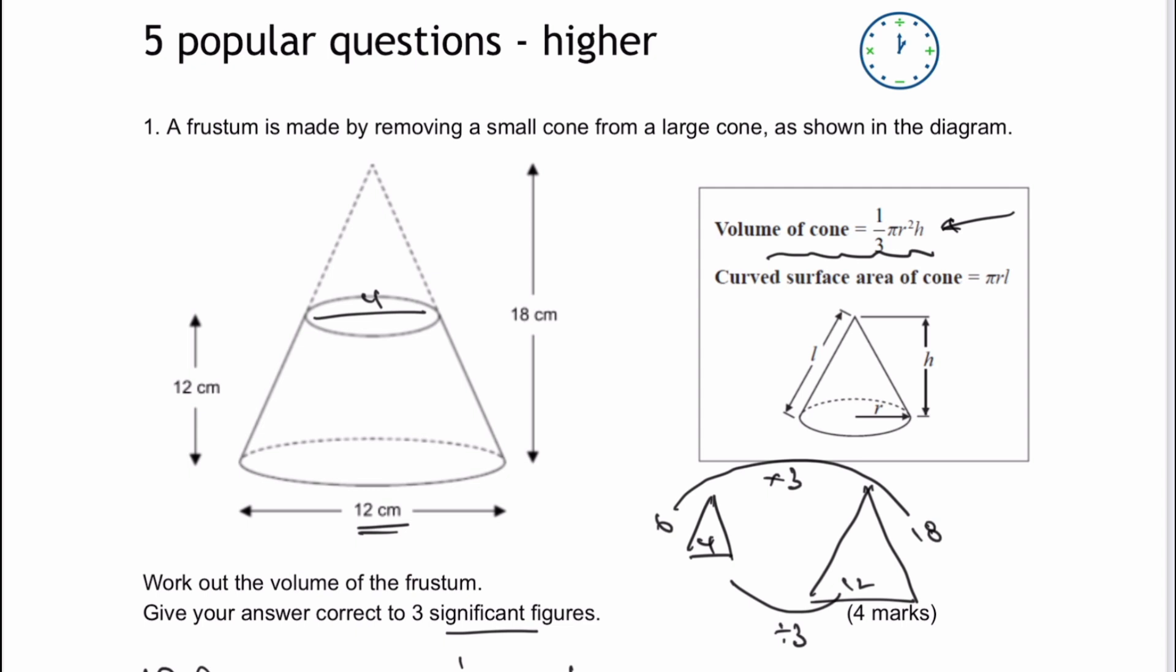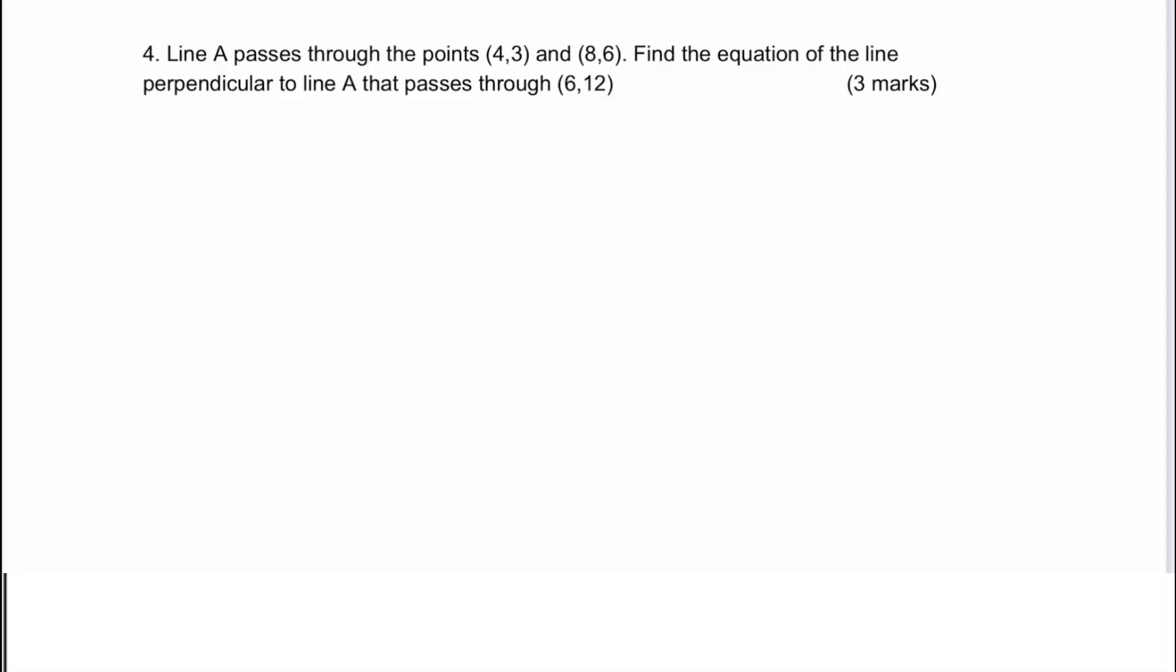In the previous video we completed through to question number three. In this video we're going to look at question number four. So this is question number four on the paper. Please do download the paper from 3-Minute Maths. It says line A passes through the points 4, 3 and 8, 6.